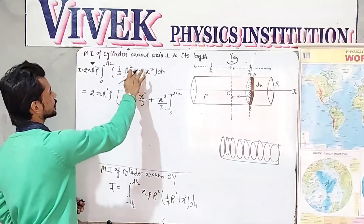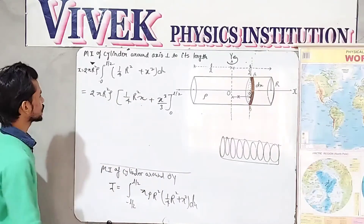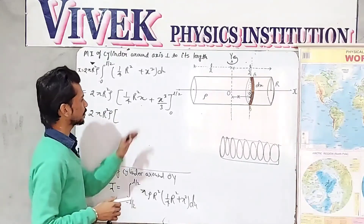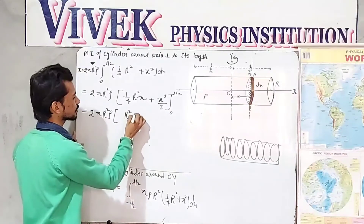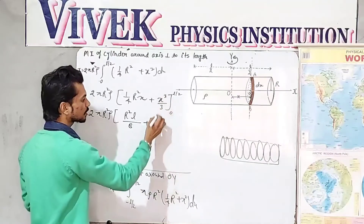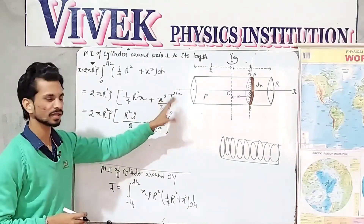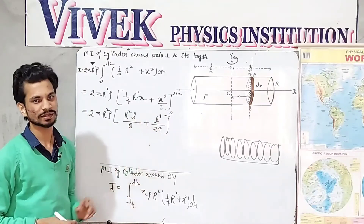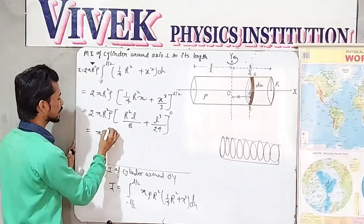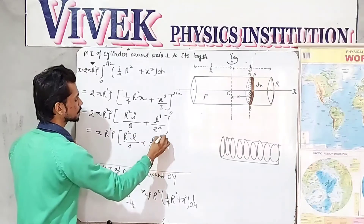Putting the upper limit x = L/2: the first term gives R² · (L/2) / 4 = R²L/8, and the second term gives (L/2)³/3 = L³/24. Since substituting 0 gives zero, the result is 2π R² ρ × [R²L/8 + L³/24]. Multiplying through by 2, the denominators become 4 and 12.